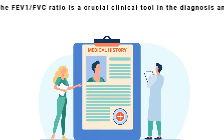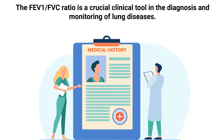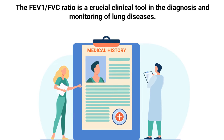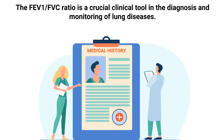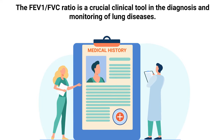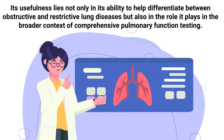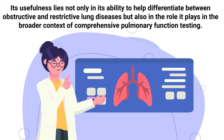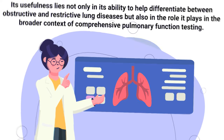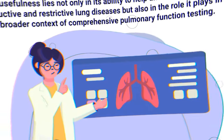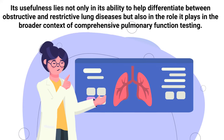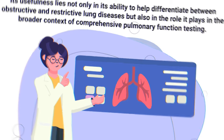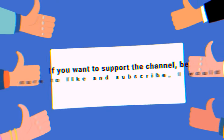The FEV1 to FVC ratio is a crucial clinical tool in the diagnosis and monitoring of lung diseases. Its usefulness lies not only in its ability to help differentiate between obstructive and restrictive lung diseases, but also in the role it plays in the broader context of comprehensive pulmonary function testing.